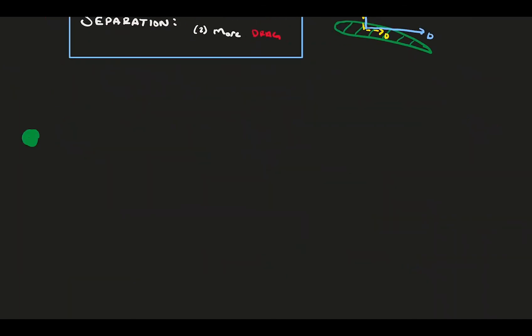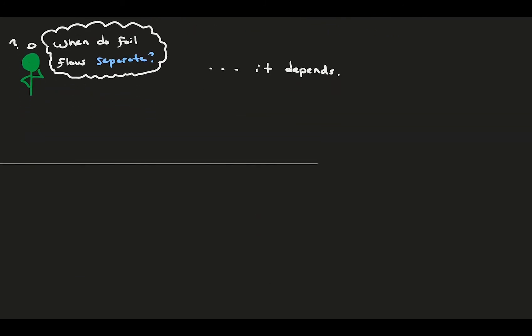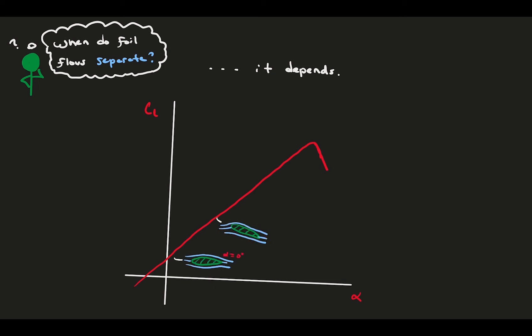You might be wondering, when exactly does flow separate over a foil? How do we predict it? Unfortunately, there's no exact answer. The best we can do is recognize separation in the performance. Consider the lift curve of a relatively thin, high-camber foil. This is the NACA 4412.